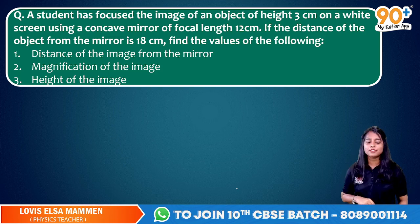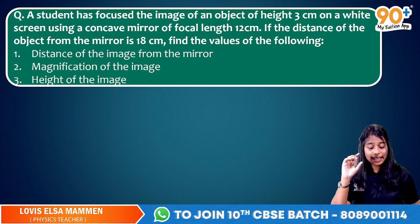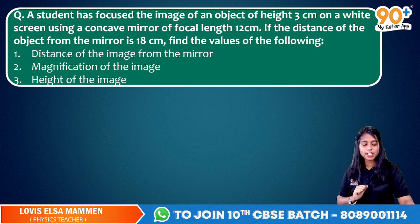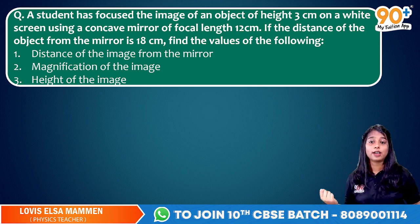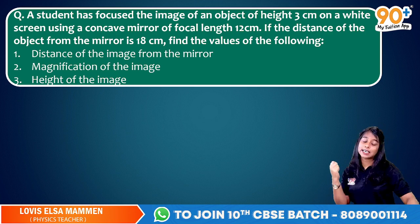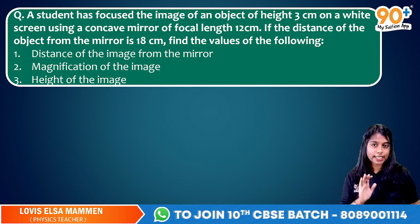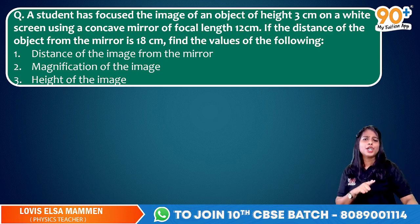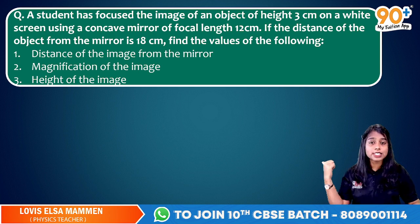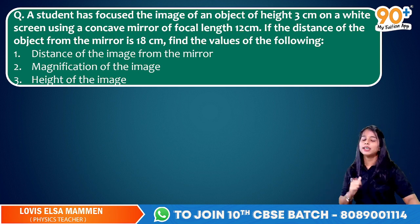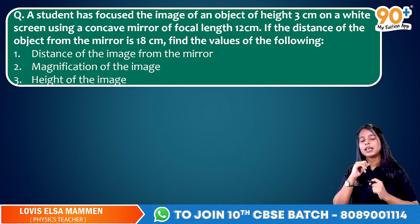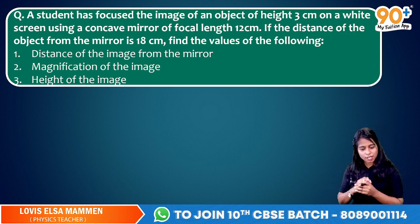A student has focused the image of an object of height 3 centimetre on a wide screen using a concave mirror of focal length 12 centimetre. If the distance of the object from the mirror is 18 centimetre, you are asked to find the values of the distance of the image from the mirror, magnification of the image, and the height of the image.